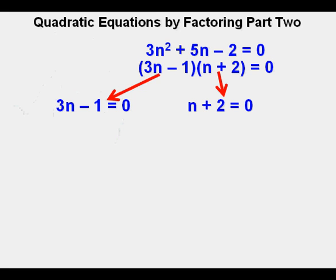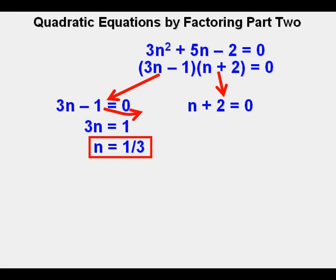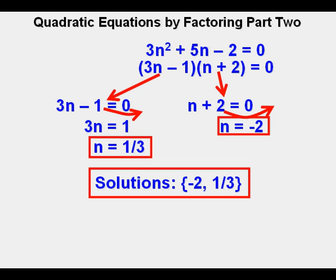He must separate the binomials into two equations to find two solutions. He places 3n minus 1 equals 0 to the left and n plus 2 equals 0 to the right. For the left equation, he takes the negative 1 over to the right, giving 3n equals 1, and dividing by 3 gives n equals 1 third. For the right equation, moving the 2 gives n equals negative 2. He writes the solutions in set notation: either negative 2 or 1 third could replace n and make the equation true.